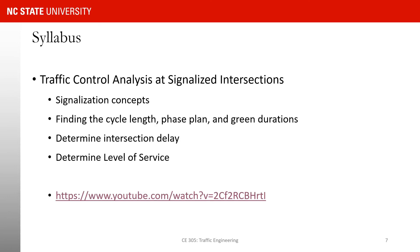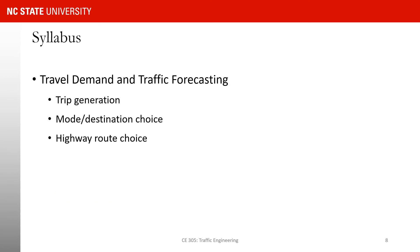In chapter seven, we start talking about interrupted flow — specifically, traffic control analysis at signalized intersections. We cover signalization concepts: cycle length, phase plan or sequence of phases, and how to determine green duration. Based on those, we find intersection delay — how much time you need to wait on average to go through the intersection — and determine level of service. I also have a link to an interesting concept of an automated intersection. In chapter eight, we talk about travel demand and traffic forecasting, including trip generation, mode and destination choice, and highway route choice.